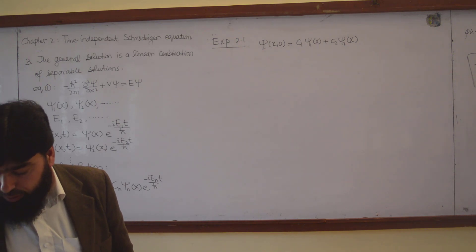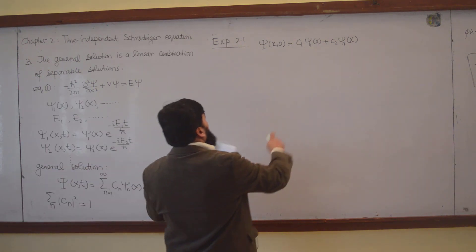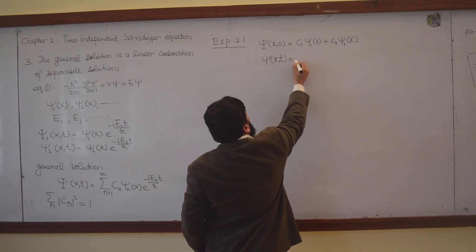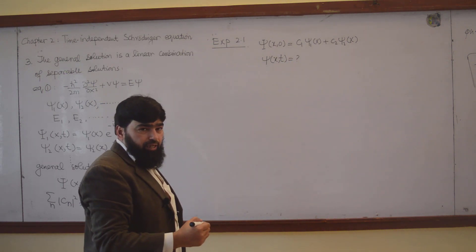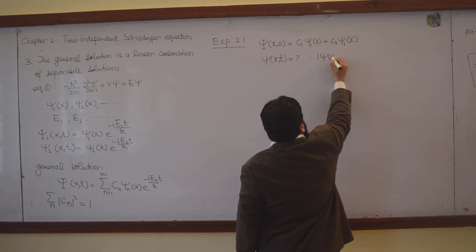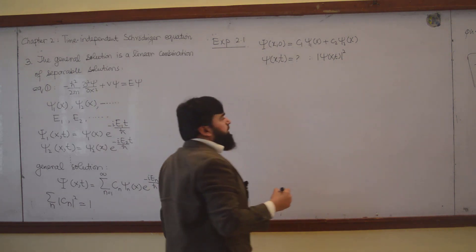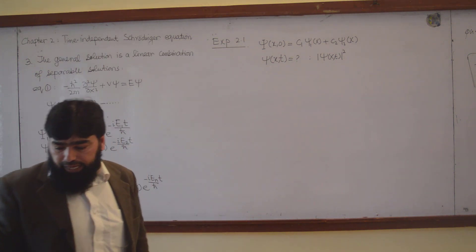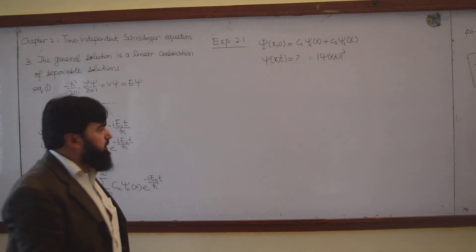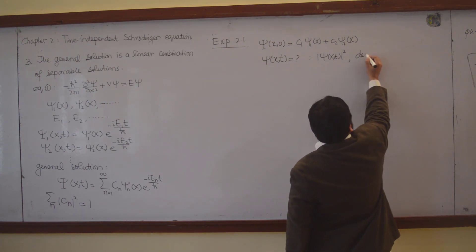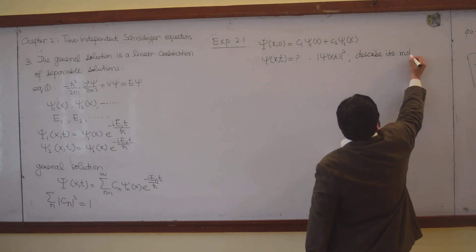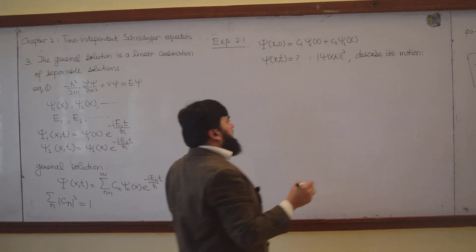We need to find the wave function — the state of the particle after some time t — and then find the probability density |Ψ(x,t)|², and describe the motion of the particle.